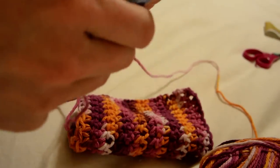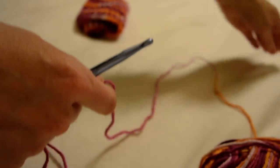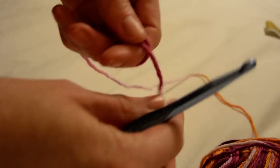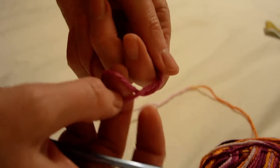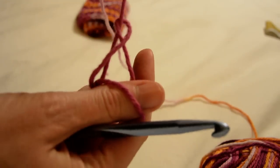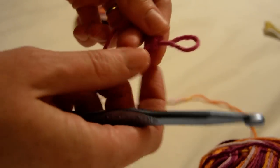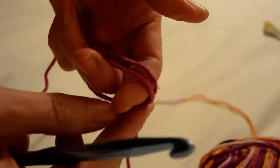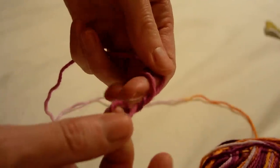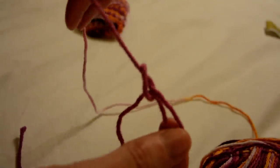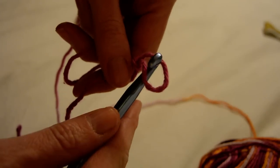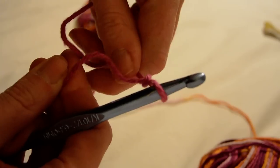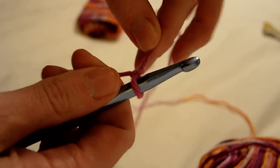Alright, we'll get started. First we're going to do our little loop knot. All I did was just like I'm making a knot, and instead of pulling it all the way through, you just keep that little loop on there. That's where our hook goes.